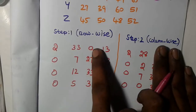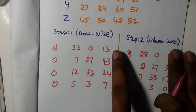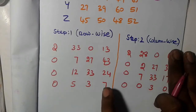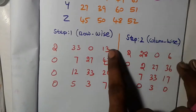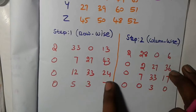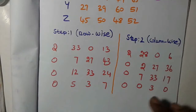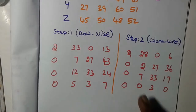In the third column, the smallest number is zero, so subtract zero and the column stays updated. In the last column, the smallest number is 7. Subtract 7: 13 minus 7 is 6, 43 minus 7 is 36, 24 minus 7 is 17, and 7 minus 7 is 0. After finishing Steps 1 and 2, move to the assignment step.